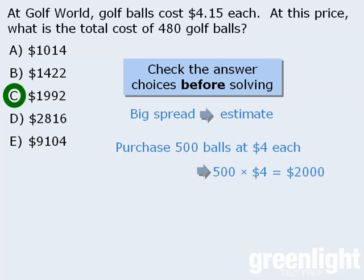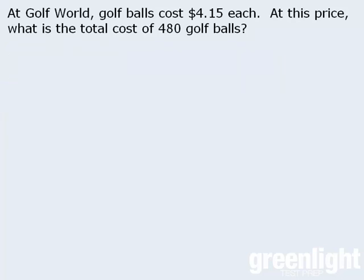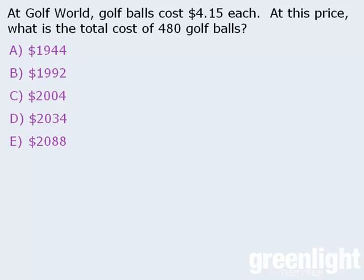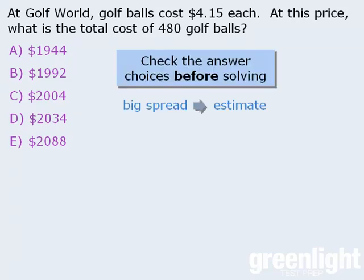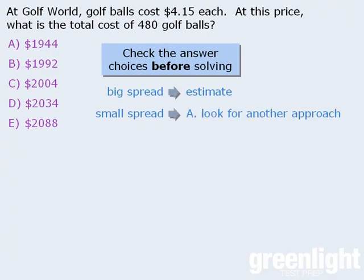Now what would we do if the answer choices weren't so spread apart? For example, what would be the best course of action if the answer choices were close together? If we estimate, we get an approximate answer of $2,000, but all of the answer choices are very close to $2,000, in which case it's impossible to determine which answer is correct. So we know that if the answer choices are considerably spread apart, we can save time by estimating. But if the answer choices are close together, plan A is to still look for a different approach, and failing that, plan B is to perform the lengthy calculations.